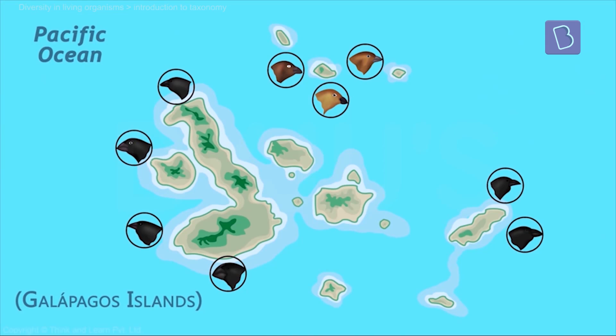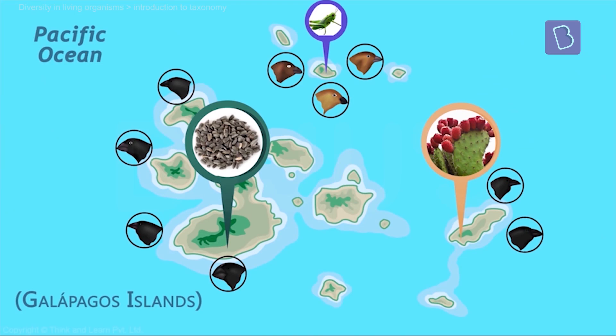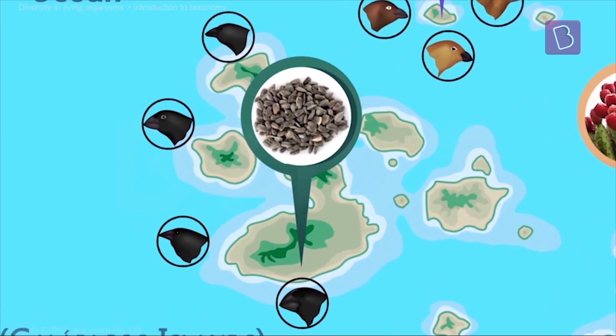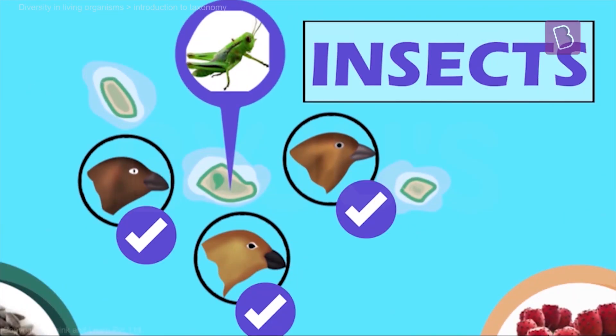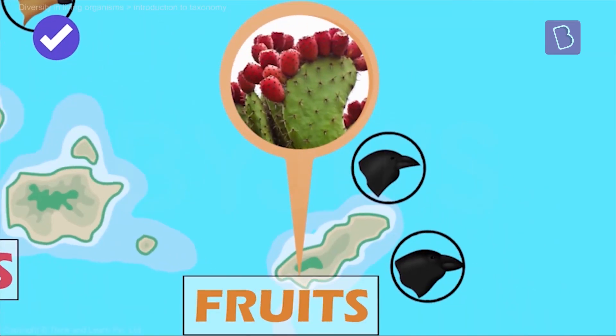The beaks were adapted based on the type of food available in that island. So what did he observe? If there were hard seeds, the beaks were thick. If there were insects, the beaks were skinny and pointed. And if there were fruit with hard coverings, like cactus fruit, then the beaks were hard so that it would puncture the fruit skin.